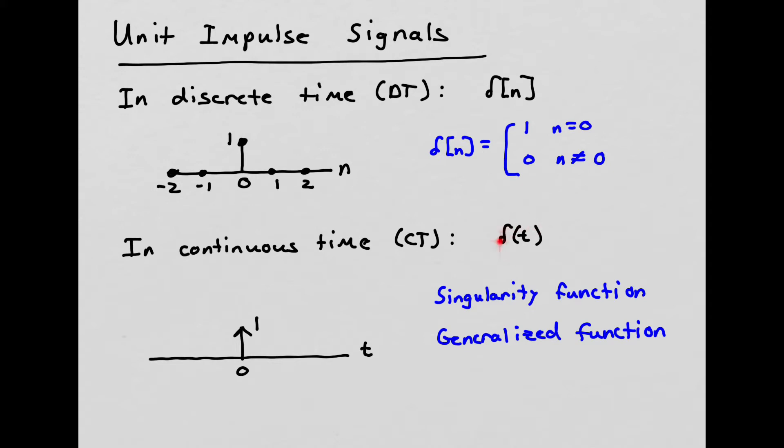In continuous time, we indicate the unit impulse by delta of t. Similar to the discrete time impulse, it's also 0 for t less than 0, and it's 0 for t greater than 0. But at exactly t equal to 0, it is discontinuous there. It's kind of a special function known in mathematics as a singularity function or a generalized function.